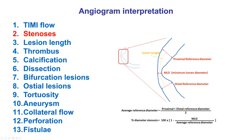The minimum lumen diameter is assessed, and we calculate what percent this represents in relationship to the average of the proximal and distal reference diameter. For example, if the minimum lumen diameter is 1 mm and the vessel is 5 mm, that would be 80% diameter stenosis.